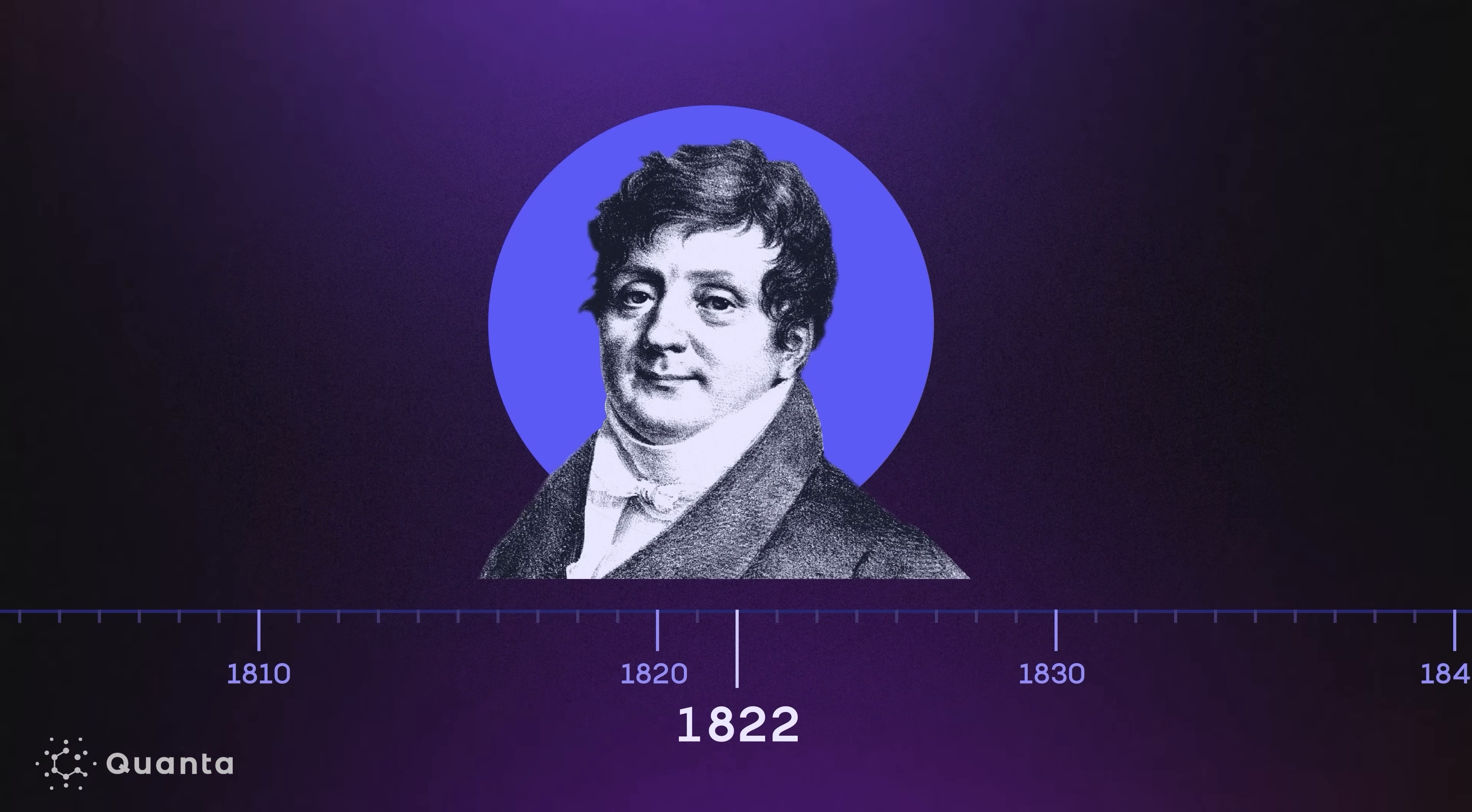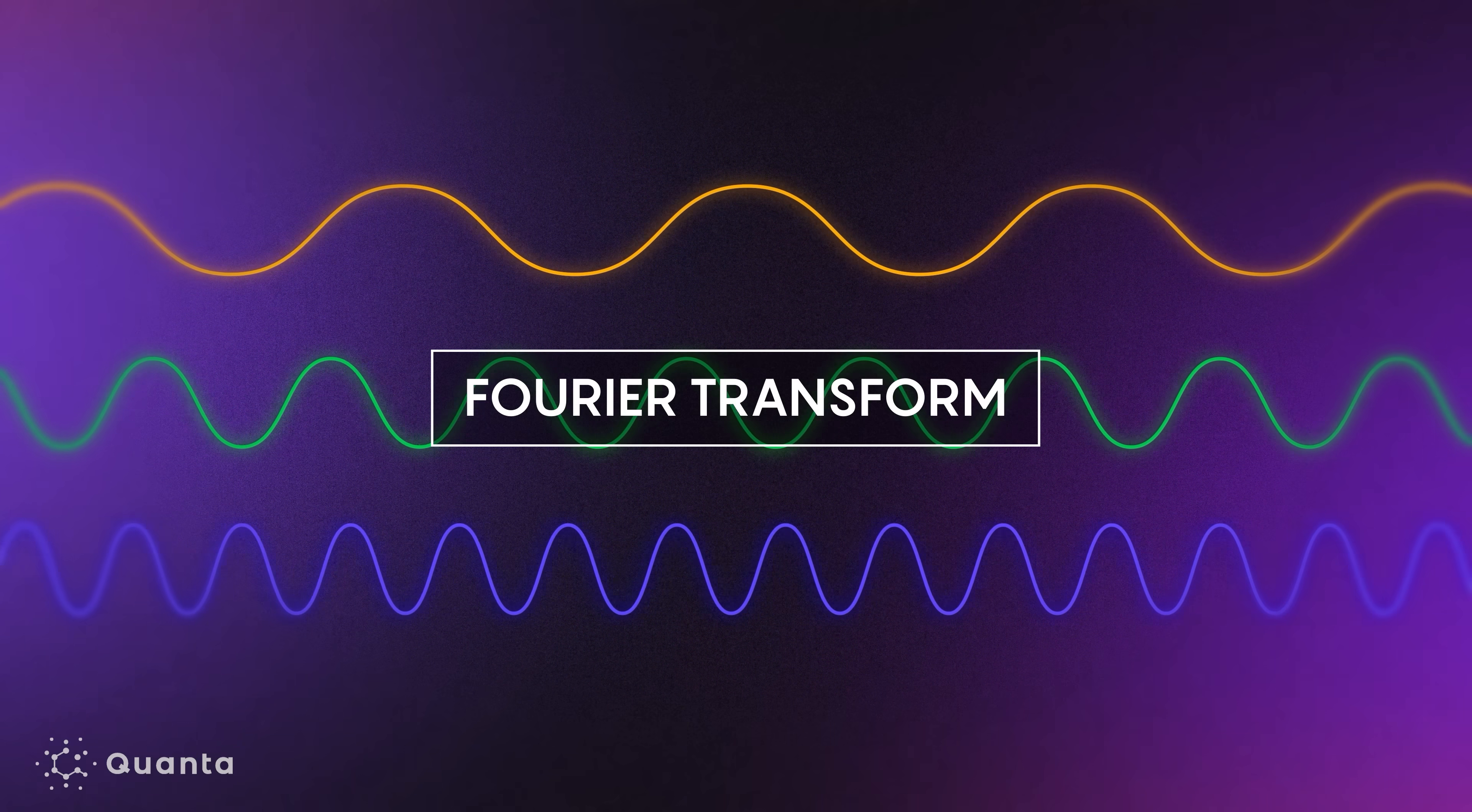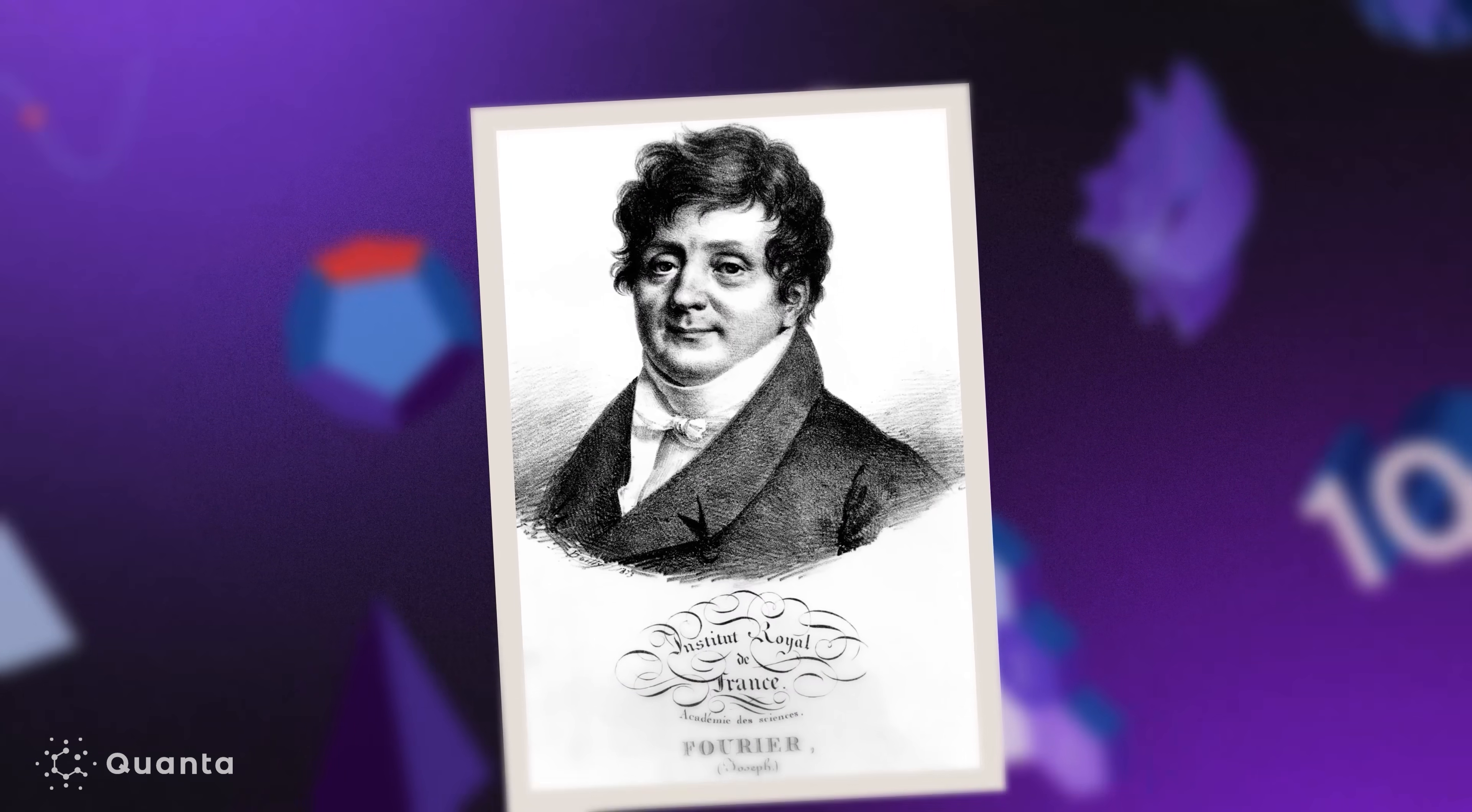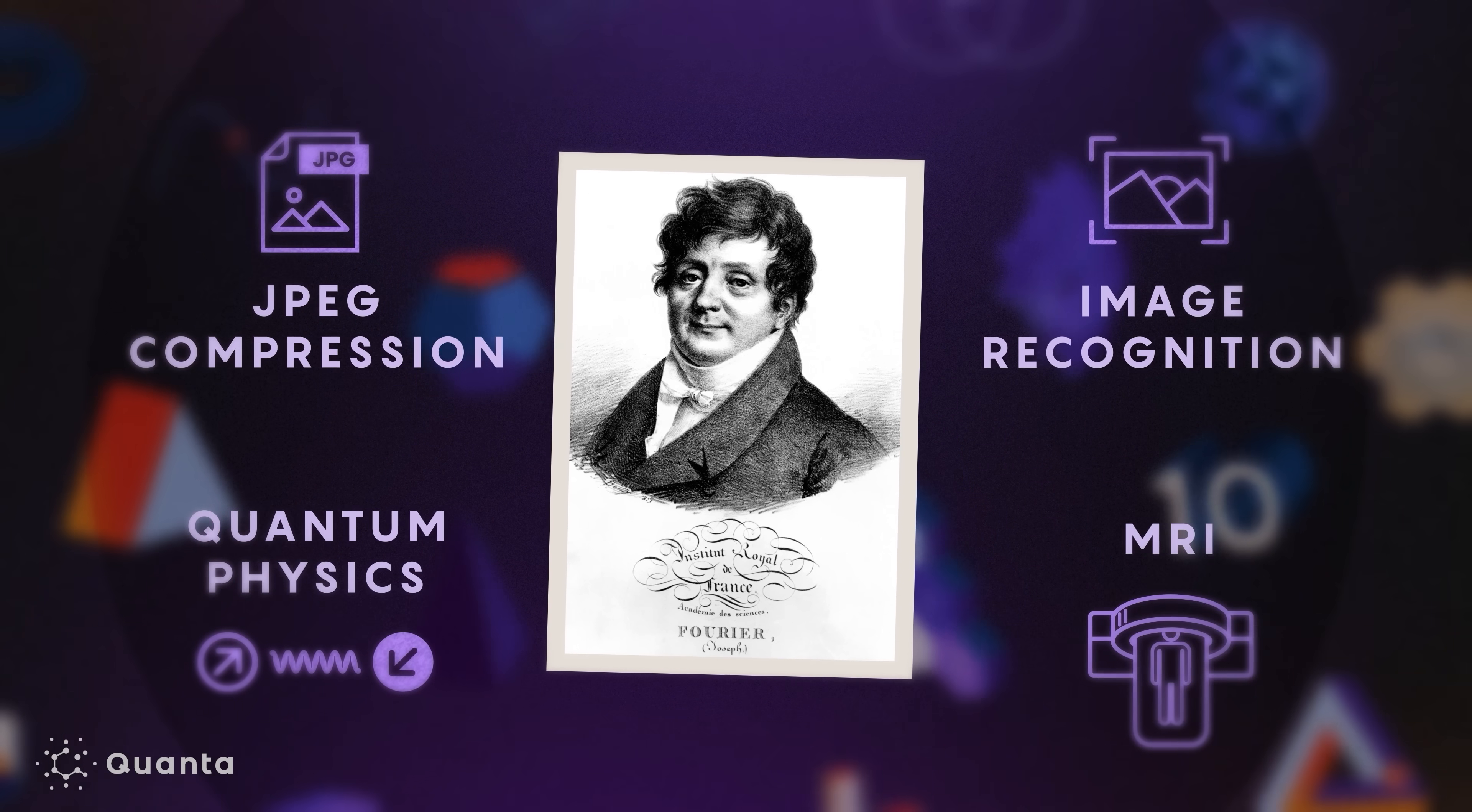In 1822, the mathematician Joseph Fourier showed that any wave can be broken down into an infinite sum of sine waves, using a technique now called the Fourier transform. The Fourier transform is like a recipe generator. You input a complicated wave and you get back its ingredients, the amplitude and frequency of each component sine wave. Fourier analysis is an essential part of modern technology. Its applications range from JPEG compression and image recognition to quantum physics and MRIs.